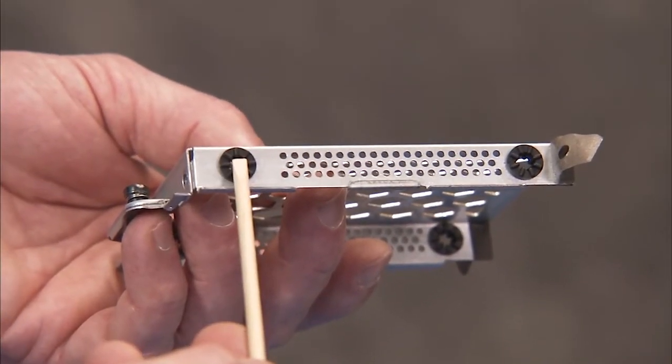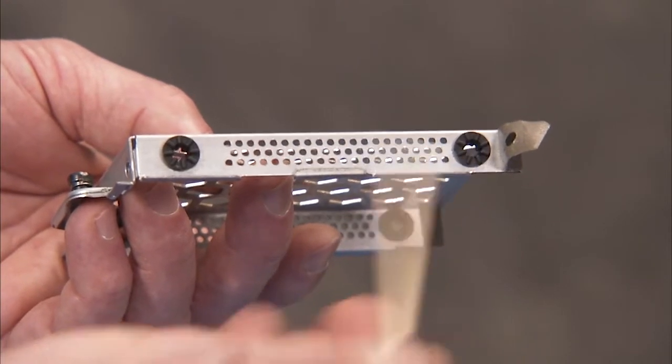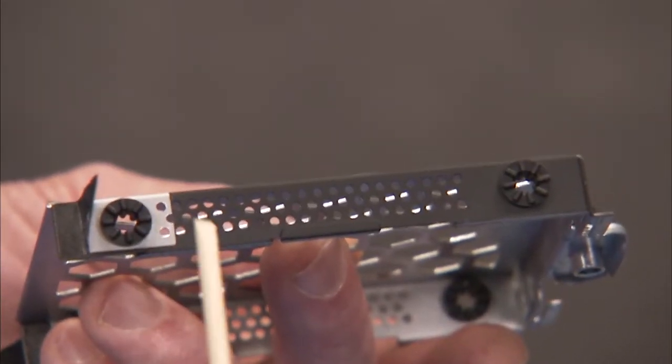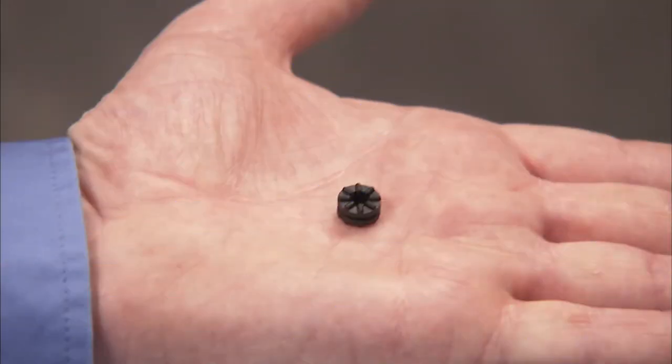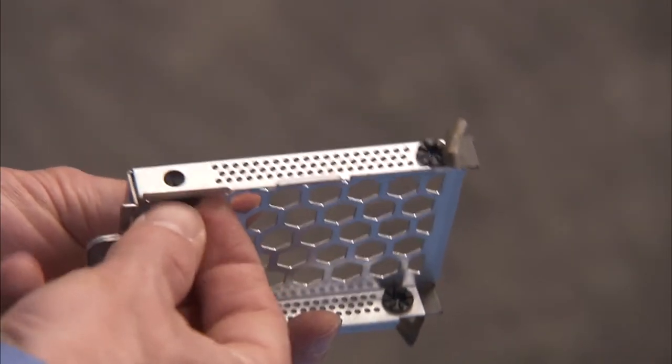Before installing any hard drive in the hard drive cage, make sure there is a rubber grommet on each side hole of the cage. Install a new grommet into any hole missing a grommet.